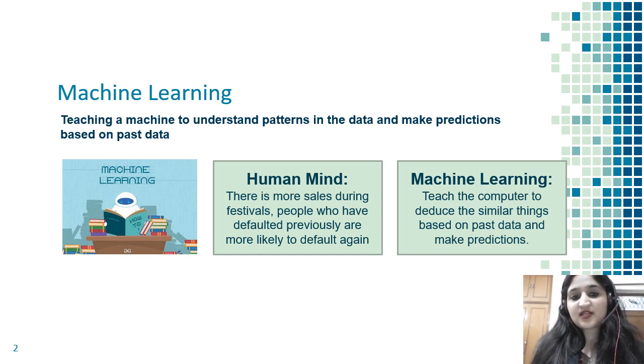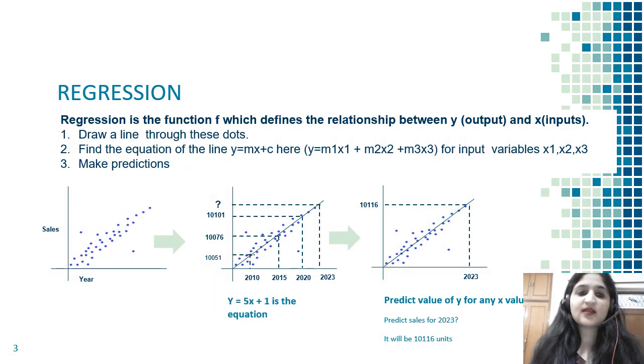If I am a relationship manager, I would be wise in who I lend out to. In machine learning, we're trying to teach the computer to deduce similar things based on past data and make predictions. For example, if it knows the sales for the past 10 years, it should be able to tell me what my sales is likely to be in the future.